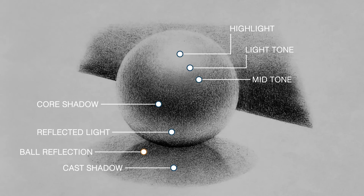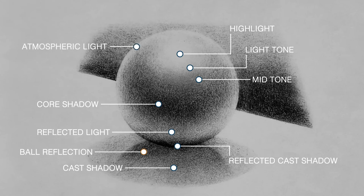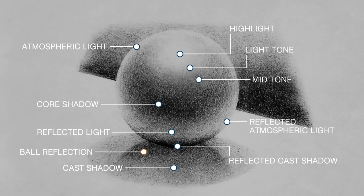You have reflected cast shadow down here, and then you have atmospheric light right here. The light ends up reflecting off of the surface area, and a small portion is reflected atmospheric light from your table.